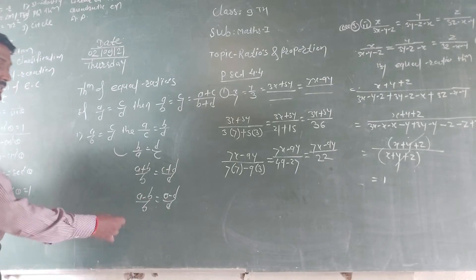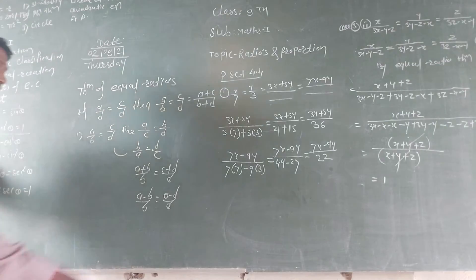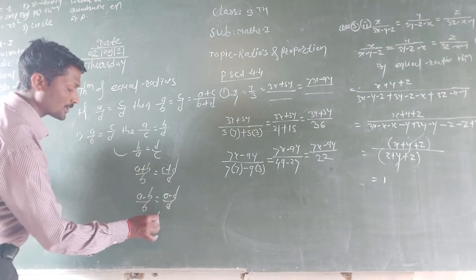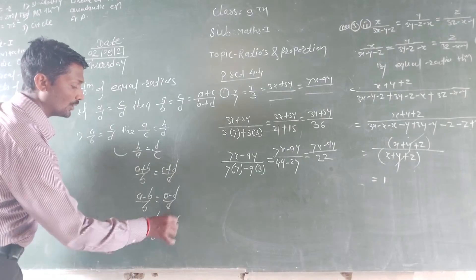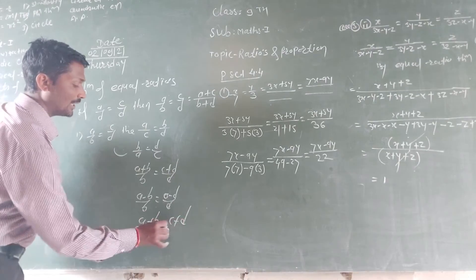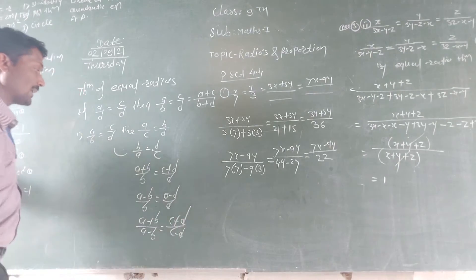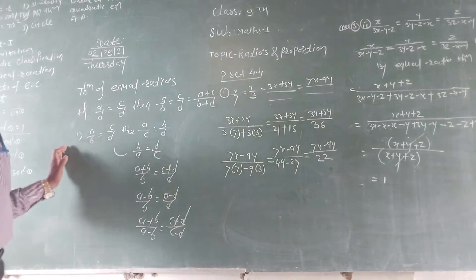And last is componendo-dividendo, which combines addition and subtraction: a plus b upon a minus b is equal to c plus d upon c minus d. That covers the operations of the given ratio.